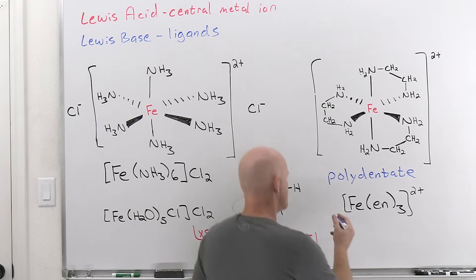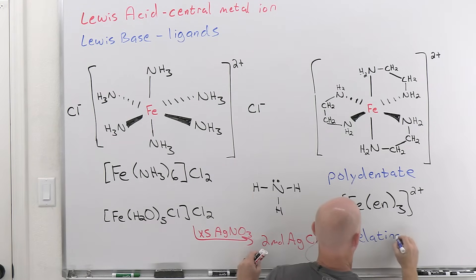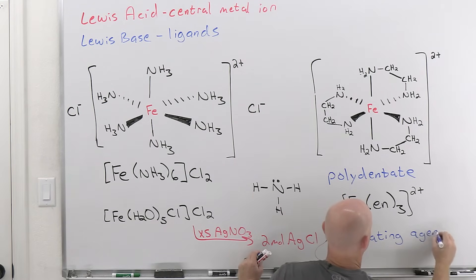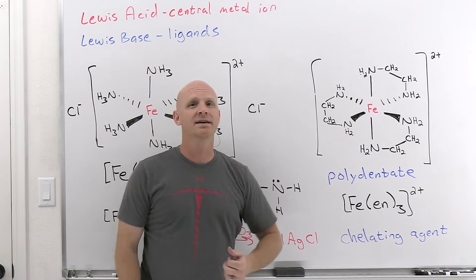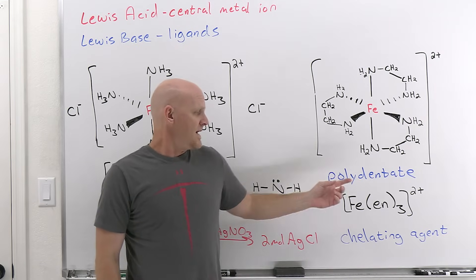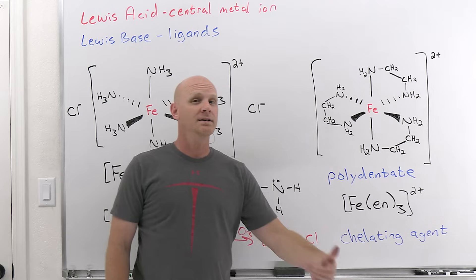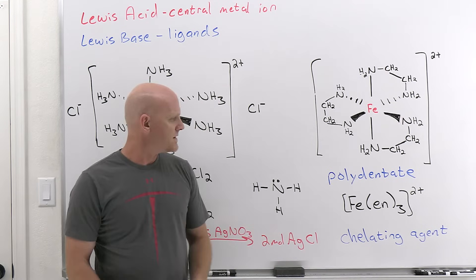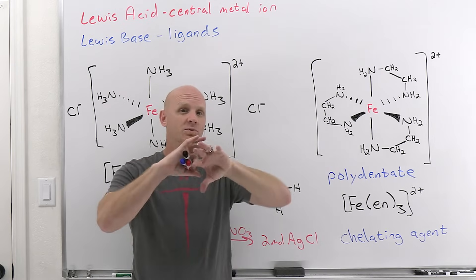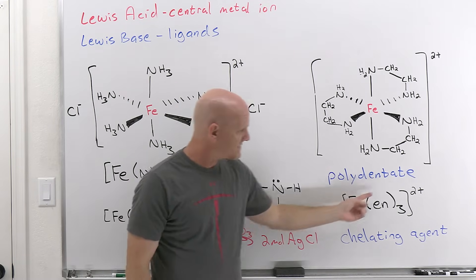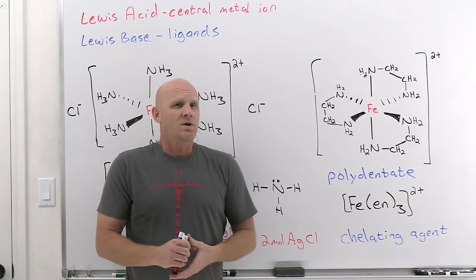You should also know the term chelating agent. Any polydentate ligand can act as a chelating agent. When chelating agents are bonded to the metal, we call that a metal chelate. These chelating agents sequester metal ions by binding and surrounding them, so this structure here would be an example of a metal chelate.